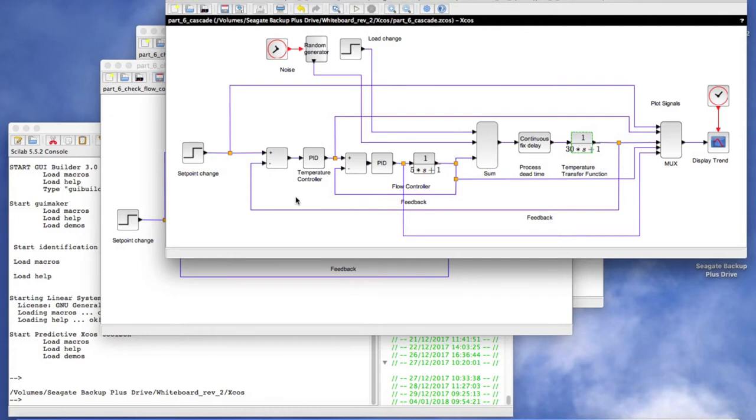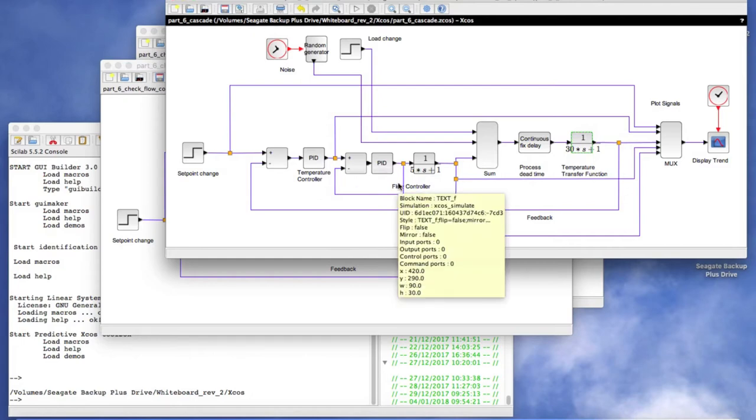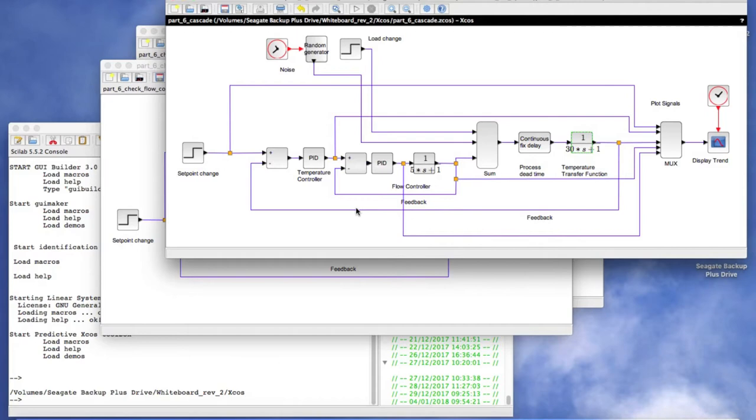Here is the heat exchanger temperature control example but implemented with the cascade control scheme. The outer or primary loop is temperature control. The PID controller is tuned for a 20 second response time. The controller output provides the set point for the inner loop, the flow controller. The inner loop is tuned for a four second response time.